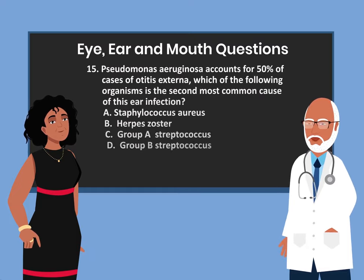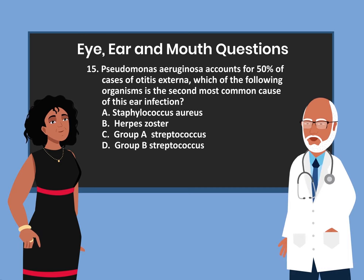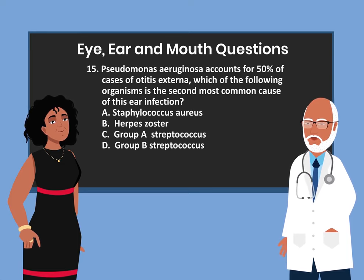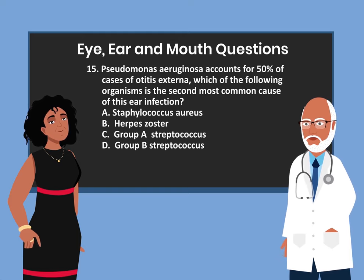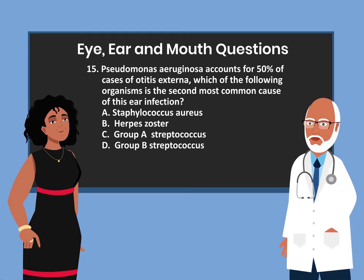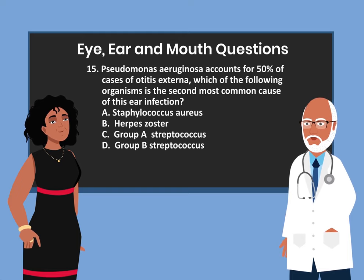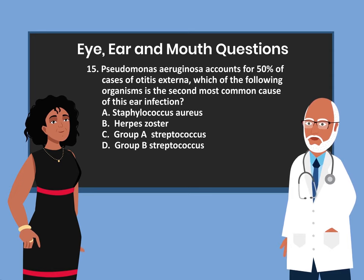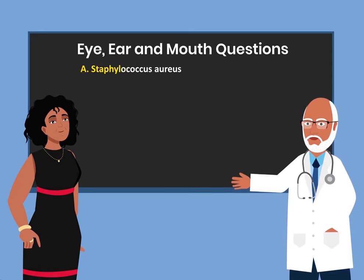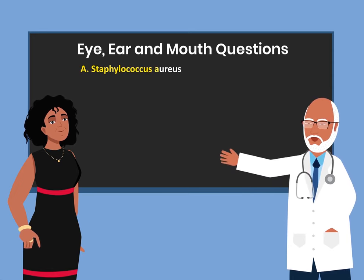Question 15. Pseudomonas aeruginosa accounts for 50% of cases of otitis externa. Which of the following organisms is the second most common cause of this ear infection? A. Staphylococcus aureus. B. Herpes zoster. C. Group A streptococcus. D. Group B streptococcus. The answer is A. Staphylococcus aureus.